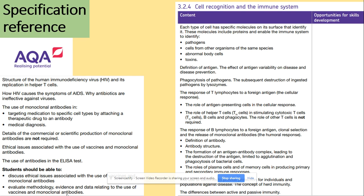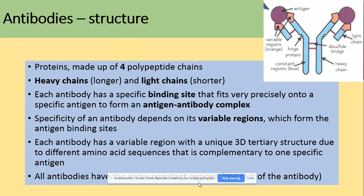In terms of the specification, where we are now, we're looking at antibodies — the definition, structure, and formation of the complex. So what is the antibody? We've mentioned in our previous video, it's a protein. It's a quaternary protein.